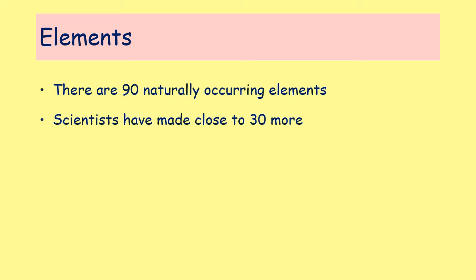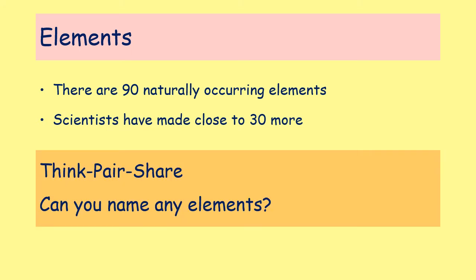There are 90 elements that have been found in nature — on planet Earth and in anything in space discovered so far. Those are naturally occurring. However, there are around 30 elements that scientists have been able to create in laboratories — very big, sophisticated laboratories that require lots of energy. Can you think of any elements you might be able to name?